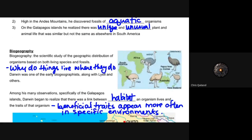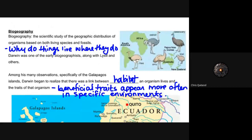With regards to biogeography, Darwin didn't come up with the idea, but he coined the general foundations of the theories. It's the study of the geographical distribution of organisms based on both living species and fossils — not just where species currently exist, but also the fossils in surrounding areas. The main idea is answering the question: why do things live where they do? He was one of the early biogeographers, along with Lyell and others.